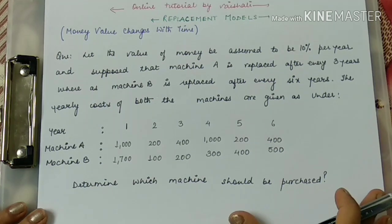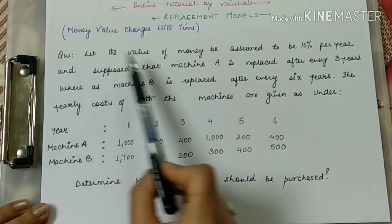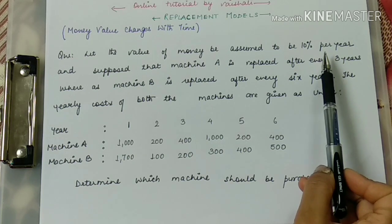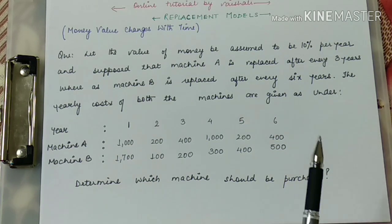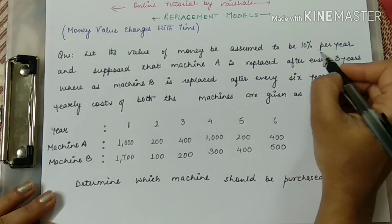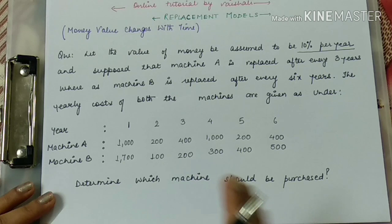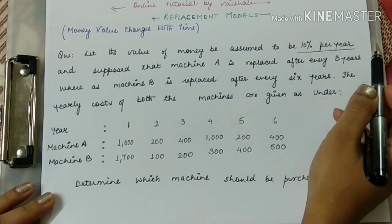Now moving directly to the question. The question states: let the value of money be assumed to be 10% per year. In my previous two videos when money value is constant, no rate of interest was given — only maintenance value, scrap value, and purchase price. But in this question, since money value changes with time, a rate of interest is given.